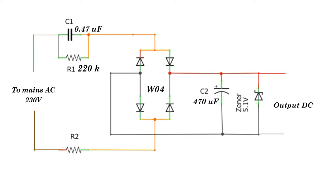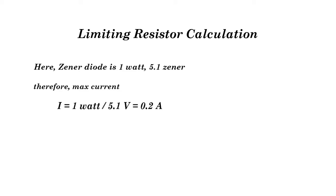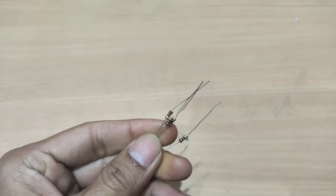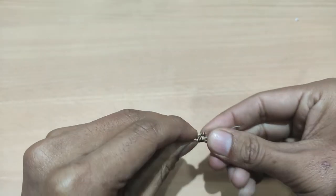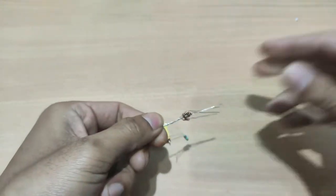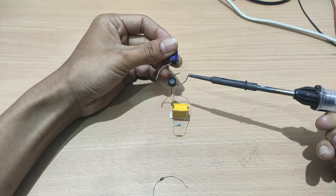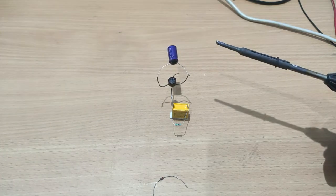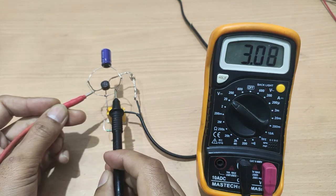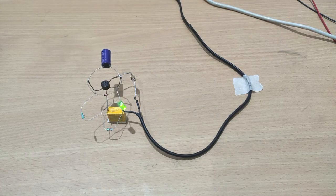For the zener diode limiting resistor calculation: the zener is 1W, 5.1V zener voltage. The resistance calculation gives 25 ohms. Using a 100 ohm resistor provides safety margin. The limiting resistor protects the zener diode from the mains voltage after accounting for diode voltage drops and zener voltage drop.